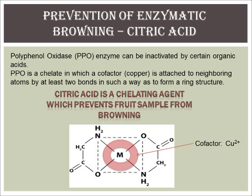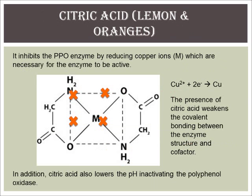Polyphenol oxidase can be denatured by some organic acids such as citric acid. Citric acid is a chelating agent that inhibits enzyme PPO by reducing the copper ions that are necessary cofactors for the enzyme to catalyse the formation of brown pigment. This is because covalent bonding between the enzyme structure and cofactor is weakened, causing the active site of PPO to be damaged. Citric acid also lowers pH, denaturing PPO. Without active PPO enzymes, oxidation of phenolic compounds in the food is disrupted and browning is prevented.